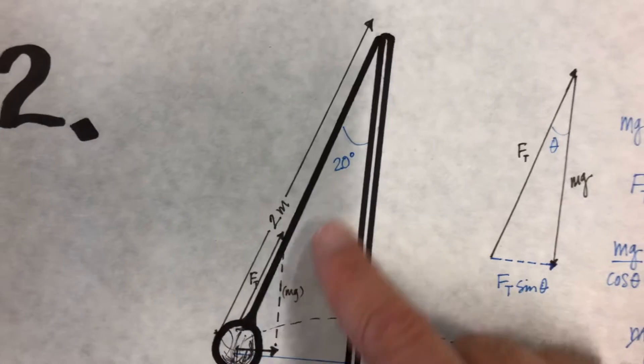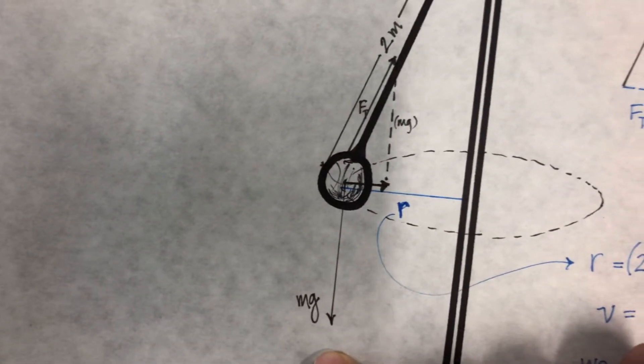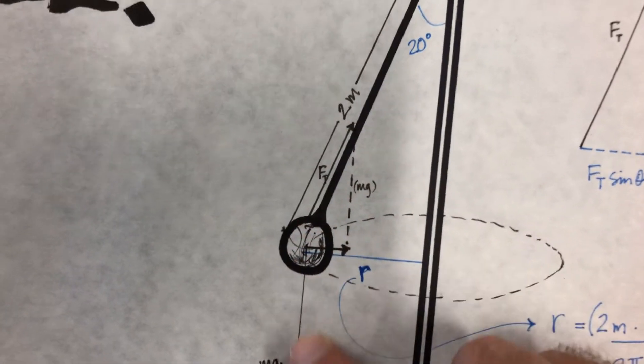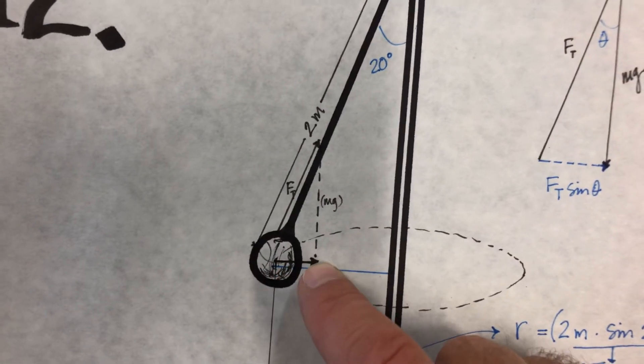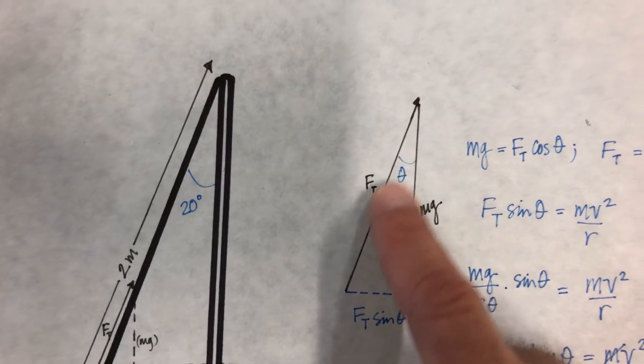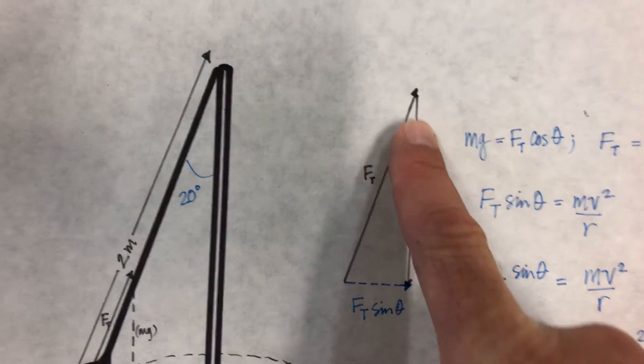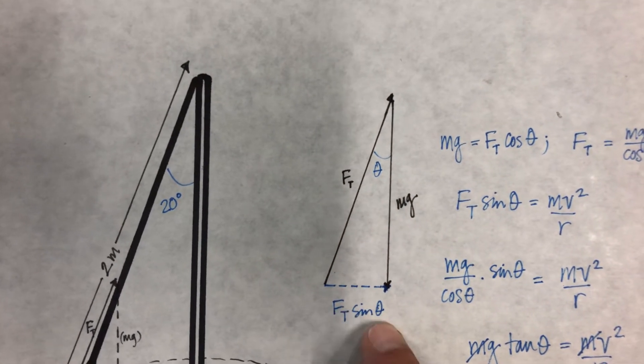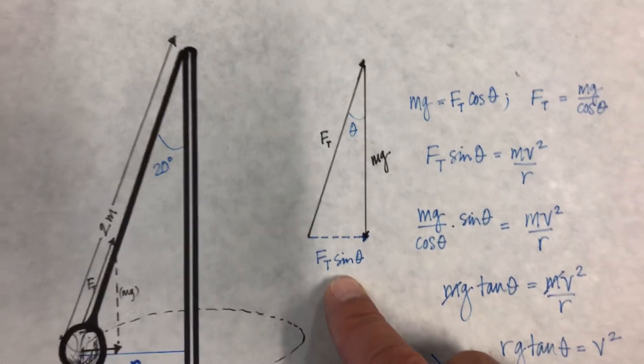We pull this free-body diagram. The tension force here in mg and the inward force, which is the centripetal force. So the tension force is pulling up this way, plus mg equals the centripetal force, which is Ft sine theta.